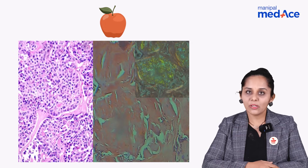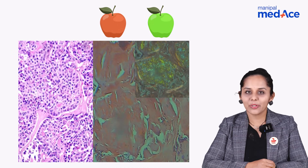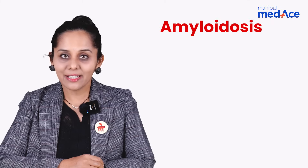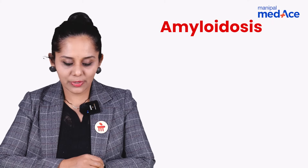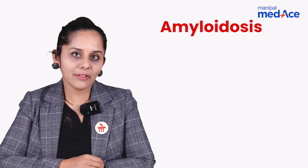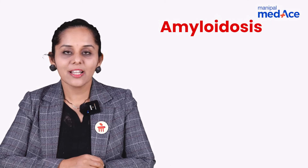Those red areas show apple green birefringence under polarizing microscopy. We are talking about amyloidosis, which is derived from calcitonin in medullary carcinoma of thyroid.